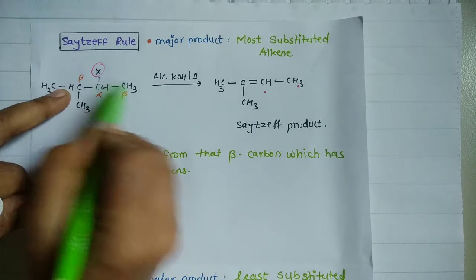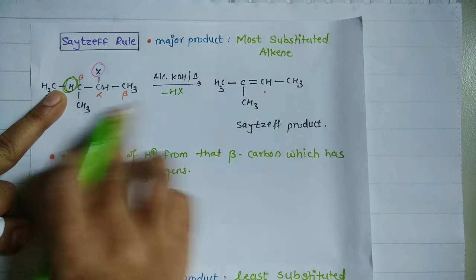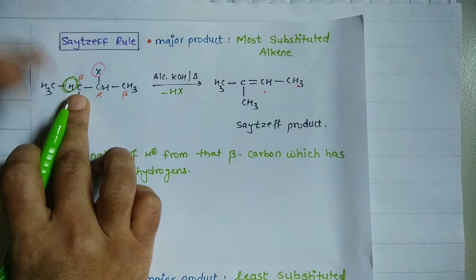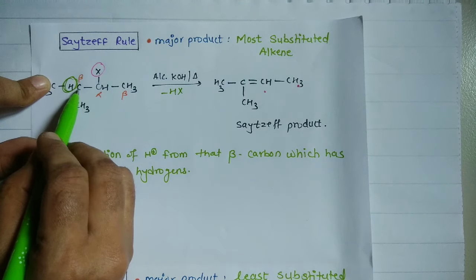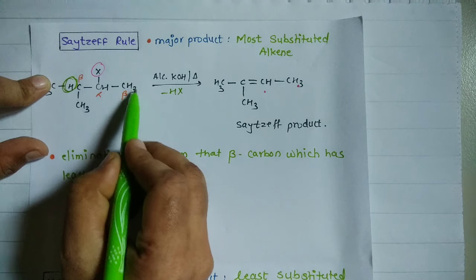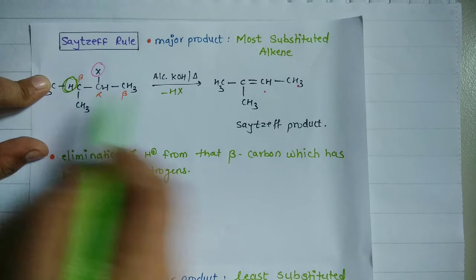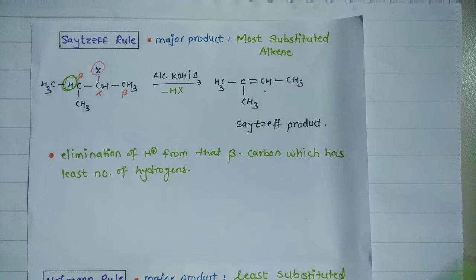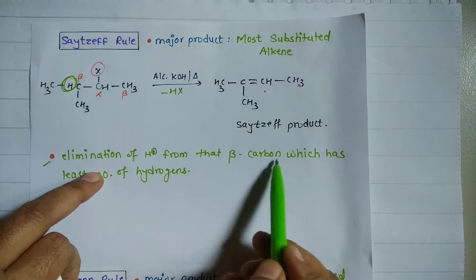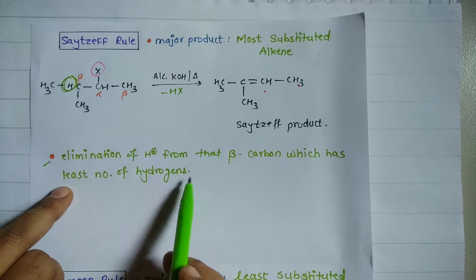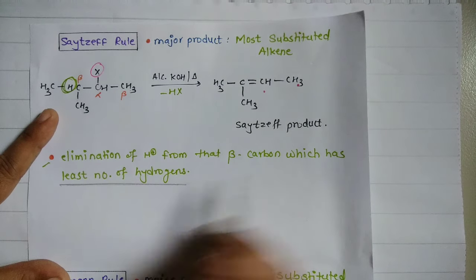We have two beta carbon options to select from. Now, for the SIDZP rule, we are going to select the hydrogen from the beta carbon which has the least number of hydrogens. This is the important point: select the beta carbon with the least number of hydrogens.